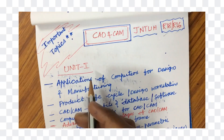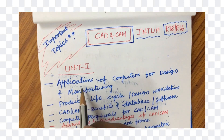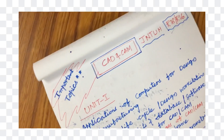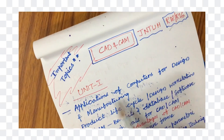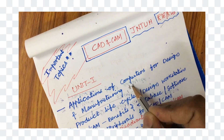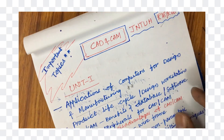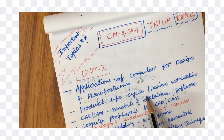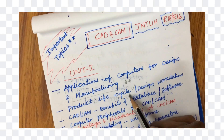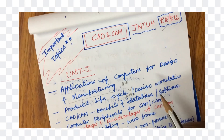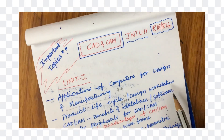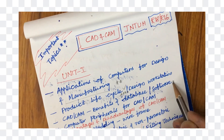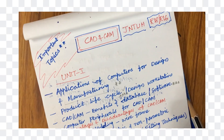Unit 1 is all about the basic fundamentals of CAD CAM and the applications of computers for design and manufacturing. Product life cycle and design workstation are very important questions we can expect this time. CAD CAM benefits, database, and software of CAD CAM is also one of the important questions in the first unit.